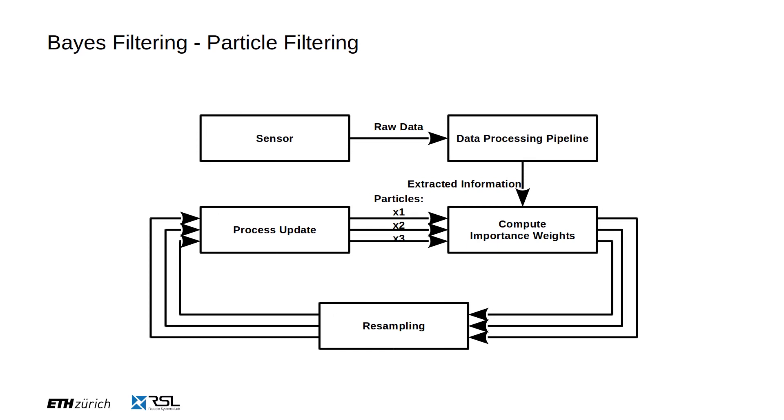Traditionally, a data processing pipeline is created to extract high-level information from raw sensor data such as images. Heuristics are employed to convert this information to importance weights.